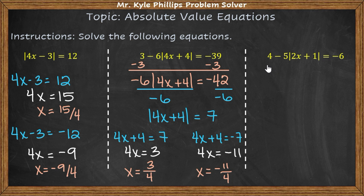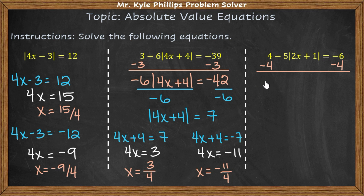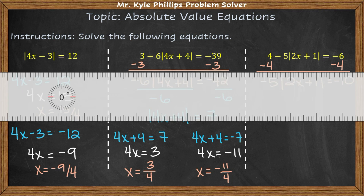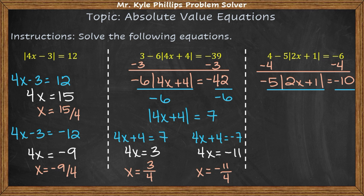For the third example, we do the same thing — subtract 4 first to isolate the absolute value. This gives us negative 5 times the absolute value of 2x plus 1 equals negative 10. Dividing each side by negative 5, we're left with the absolute value of 2x plus 1 equals 2.